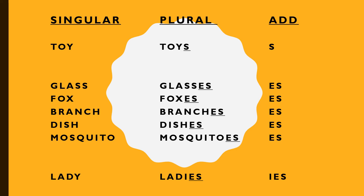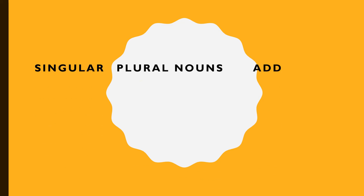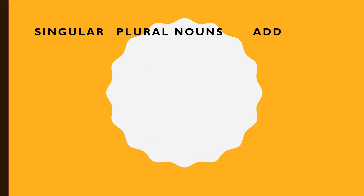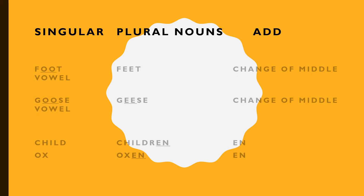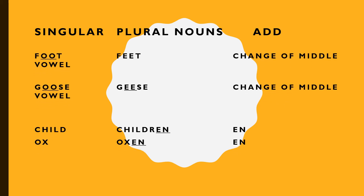For words ending in 'y', we change the 'y' to 'i' and then add 'es'. For example, 'lady' becomes 'ladies'. One lady, many ladies.